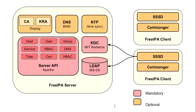Architecturally speaking, the block diagram shows the critical components being MIT Kerberos, 389DS which is the LDAP server, and an Apache front-end providing access to a whole bunch of plugins running inside a WSGI application that perform all of the administrative actions you may require. The optional components are DogTag which is the CA, Bind is the DNS implementation, and NTP is required for time synchronisation.